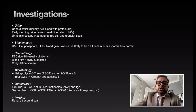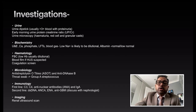Investigations start with the urine dipstick — if more than 3+ positive, consider hematuria, which may also be associated with proteinuria. Measure the early morning urine protein-to-creatinine ratio. Urine microscopy may reveal hematuria, red cell casts, and granular casts.